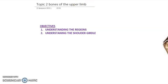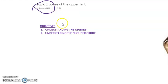Good evening, future doctors, future leaders of our medical faculties and definitely future surgeons. Today's topic is going to be based on our two objectives. We have begun the series of topic two, which is a series of the upper limbs. The upper limbs is going to involve us with understanding the regions in the first objective, and the second objective will be understanding the shoulder girdle. So without wasting any time, let us first understand which regions we are going to be talking about in topic number two.